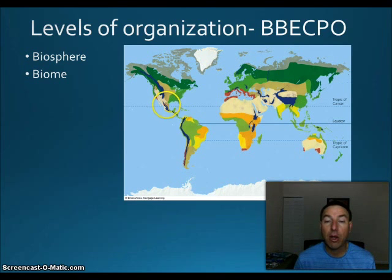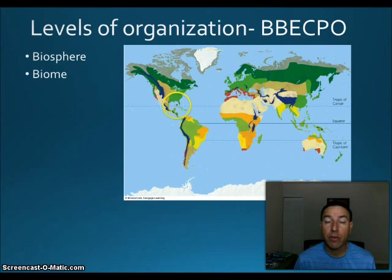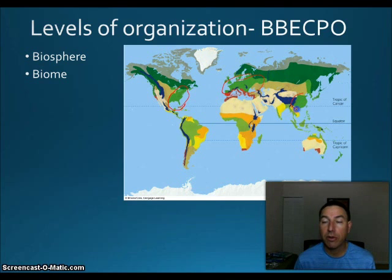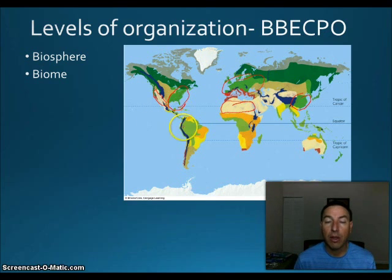The next level of organization is a biome — a large area on the surface of the planet with a very similar climate and plant community. Here in the United States we live in the deciduous forest biome, and you see some of that same biome in Europe and parts of Asia. Other biomes include deserts, mountain biomes, and of course rainforest down in Brazil.